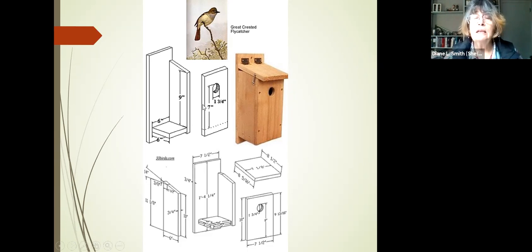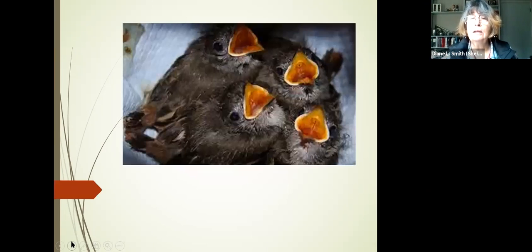All right. One thing about this particular box, with this size hole, it is not uncommon for a starling to try and gain entrance to it. So again, starlings are not native birds. So you want to try and exclude them if you can. So you want to keep an eye out for that. And if they do start building a nest in the box, you need to remove the starling nest. So what you can do to further discourage starling is you can mount this box hanging from a branch so it sways a little bit. Starlings don't like that, but flycatchers don't seem to mind it. So that would also discourage starlings from using this nest box. Here are some babies looking for food.